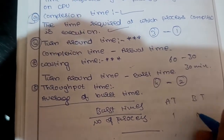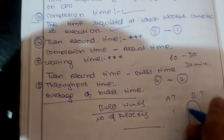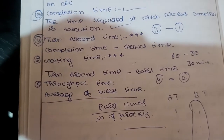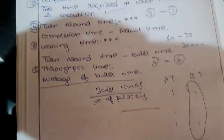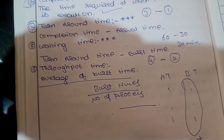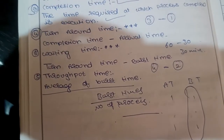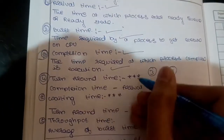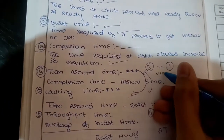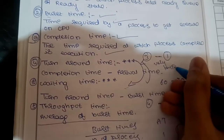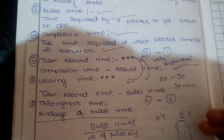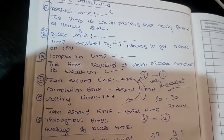Average burst time is the sum of burst times of all processes divided by the number of processes. If you are not getting this, please let me know so I can solve your doubt clearly. Mainly, turnaround time and waiting time are very important — you will be asked about these in exams.